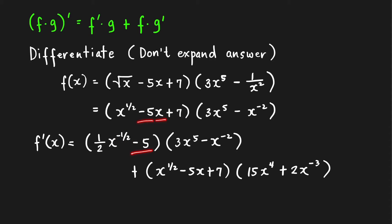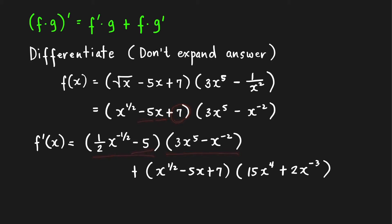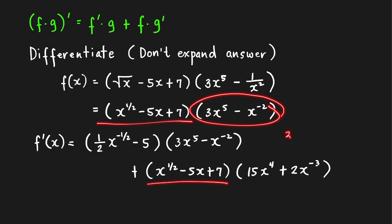So that is the derivative of the first factor; just copy the second factor. Now copy the first factor and multiply it with the derivative of the second factor. The derivative of 3x⁵ is 15x⁴. Then minus the derivative of x^(−2): bring down the power and subtract 1 from the power.